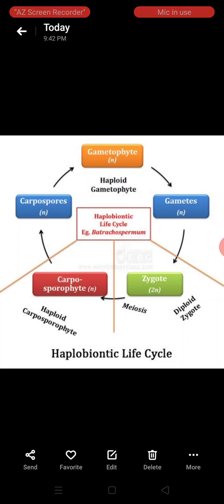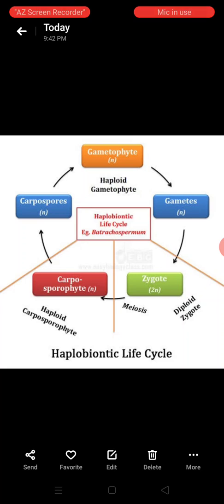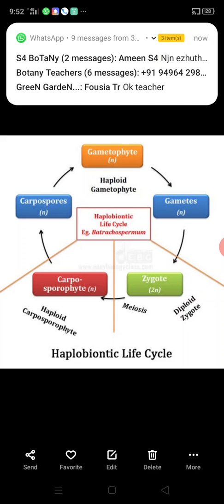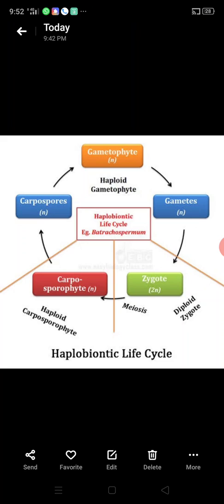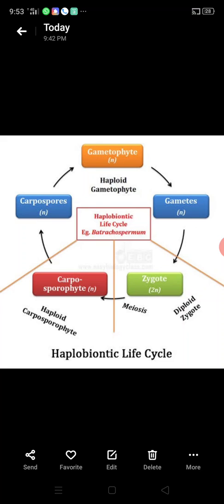The carposporophyte is a small, branched and filamentous somatic individual, dependent on the gametophyte. At the tips of its filaments, it develops the carposporangia. Inside these carposporangia, haploid unicellular spores are formed, called carpospores. These carpospores germinate and undergo repeated mitotic division to again give rise to the haploid gametophytic plant.